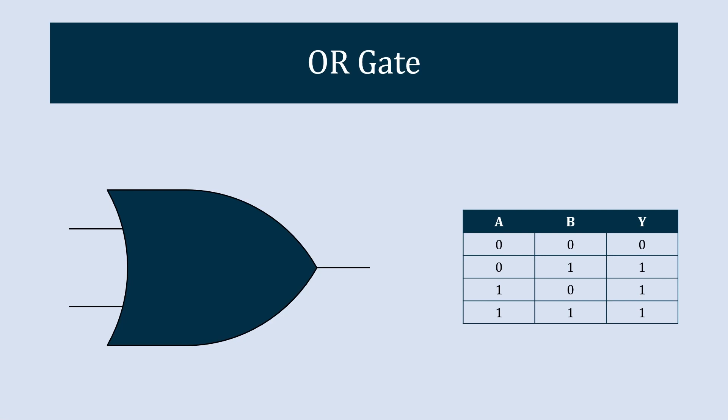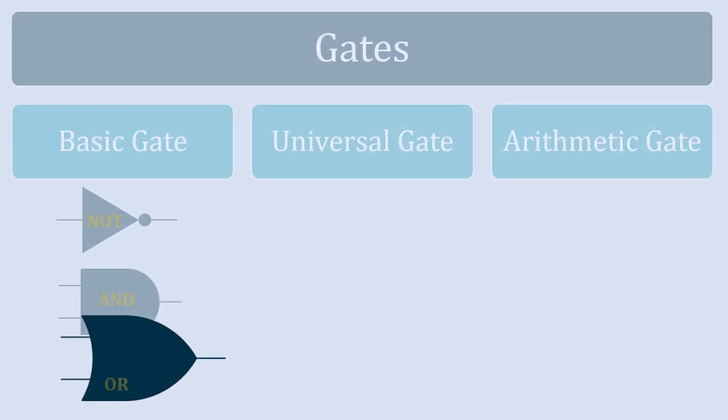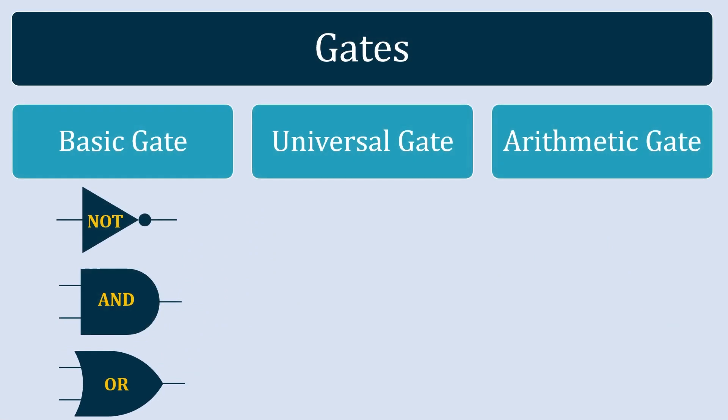In the AND gate, if all the inputs are 1 we get output as 1. In the OR gate, if at least one of the inputs is 1, we will get output as 1. NOT gate, AND gate, and OR gate are the three basic gates.